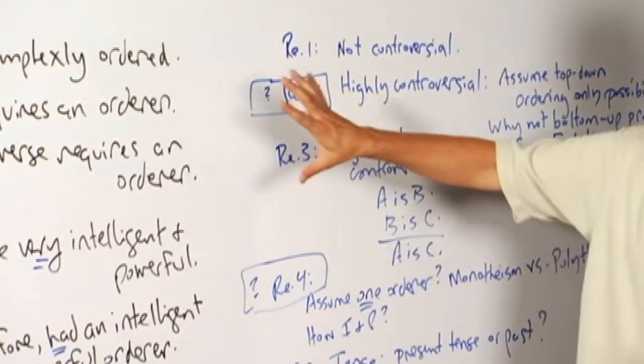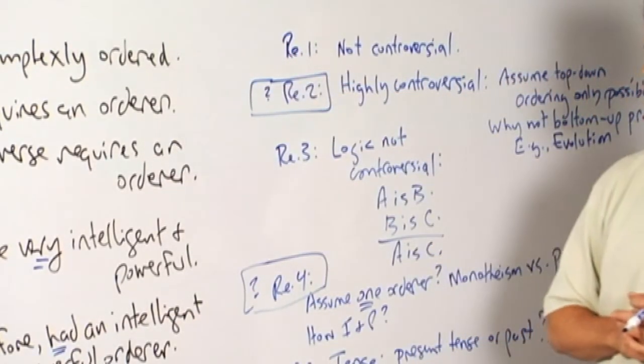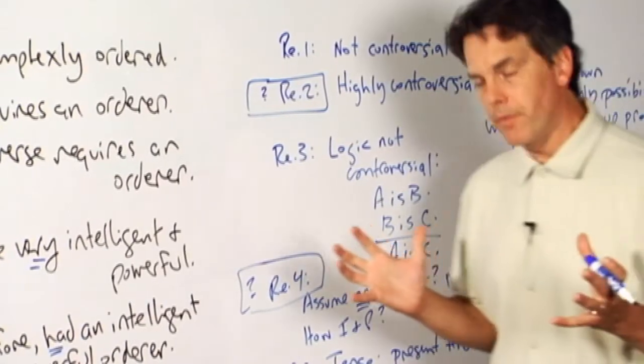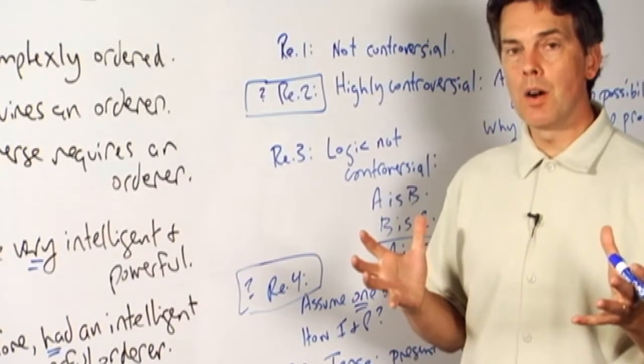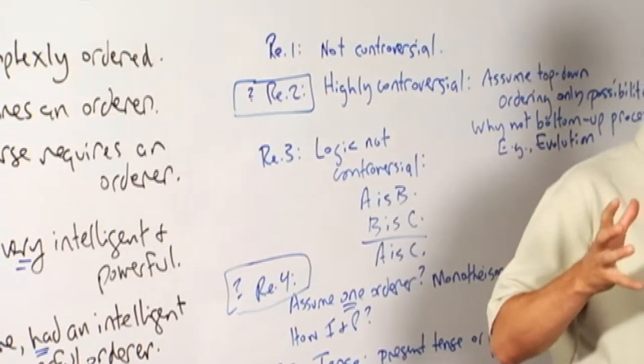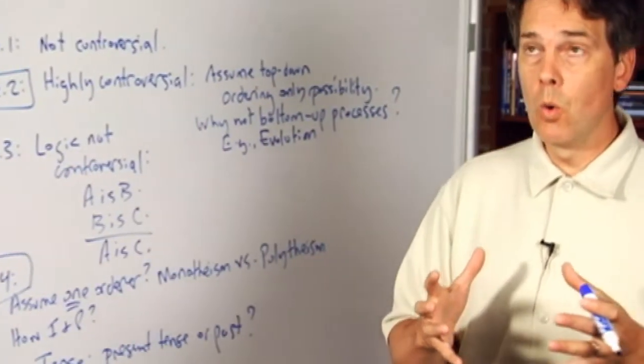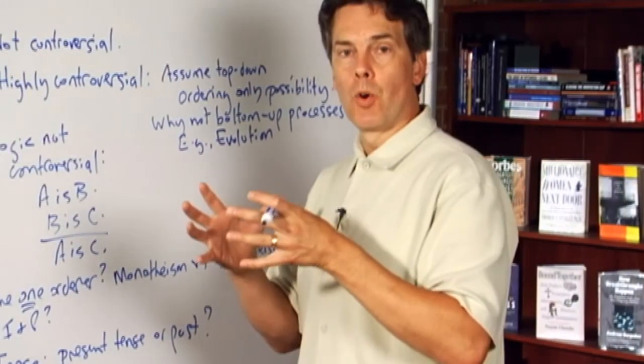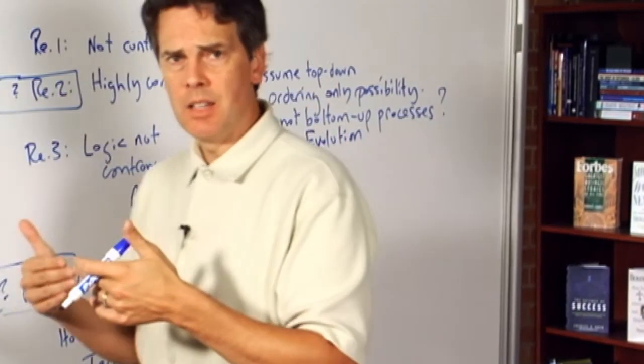So if we agree with the argument entirely up to this point here that the complex order of the universe does require an orderer,